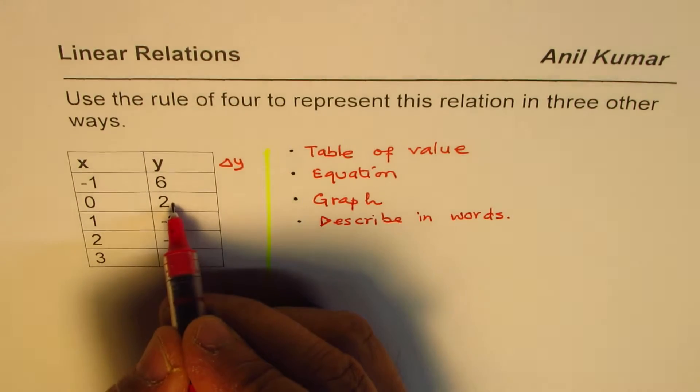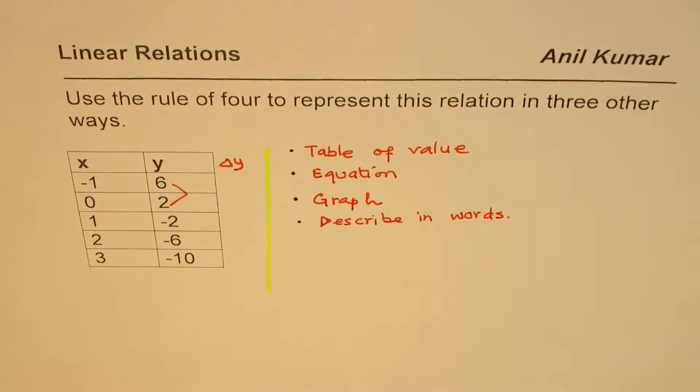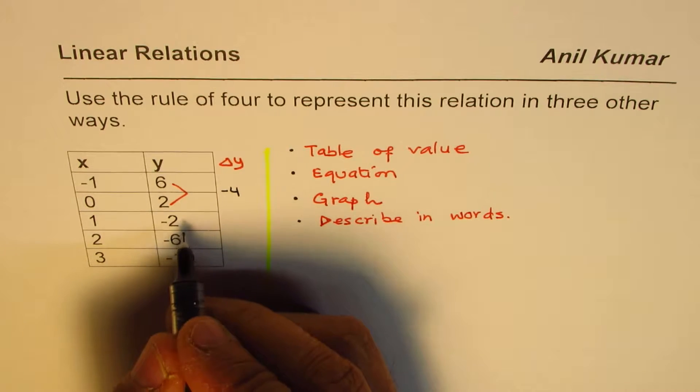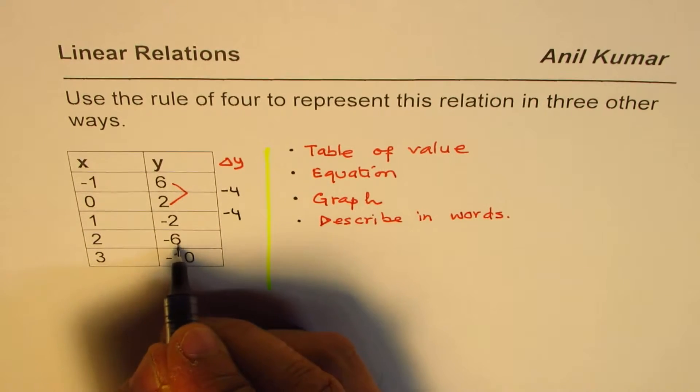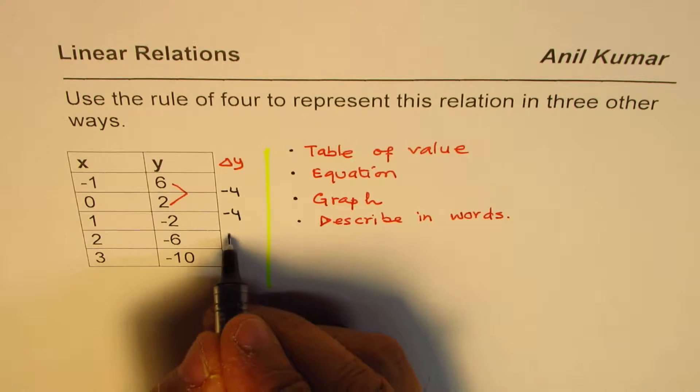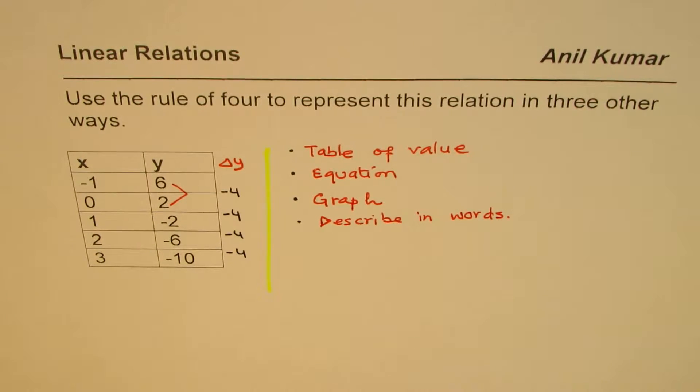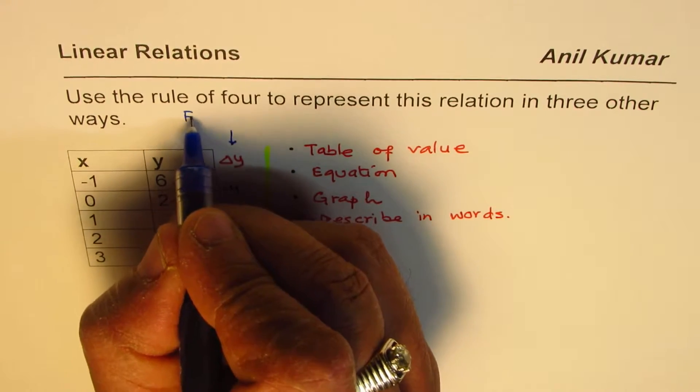So, I will do 2 minus 6. And 2 minus 6 gives me minus 4. Similarly, I will do minus 2 minus 2. That is also minus 4. Minus 6 minus 2 is minus 4. Minus 10 minus 6 is also minus 4. So, what we notice here is, we call this as the first difference. This is what is called first difference.